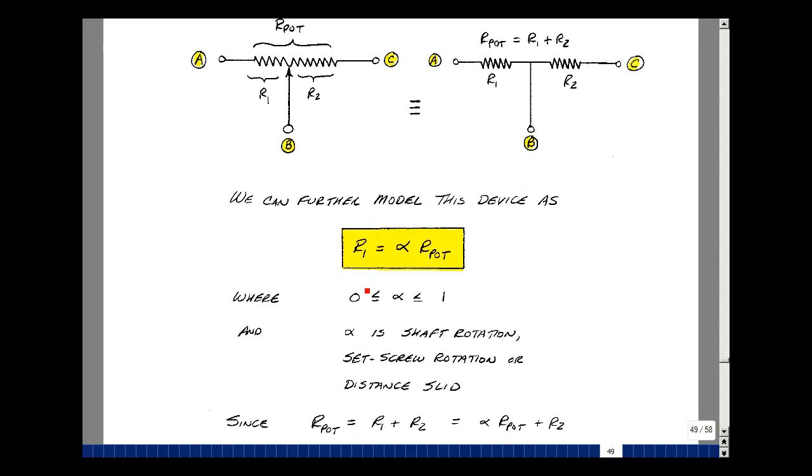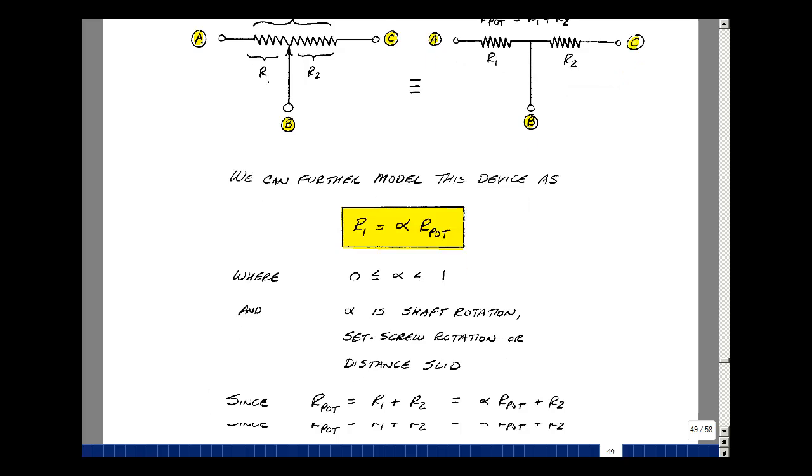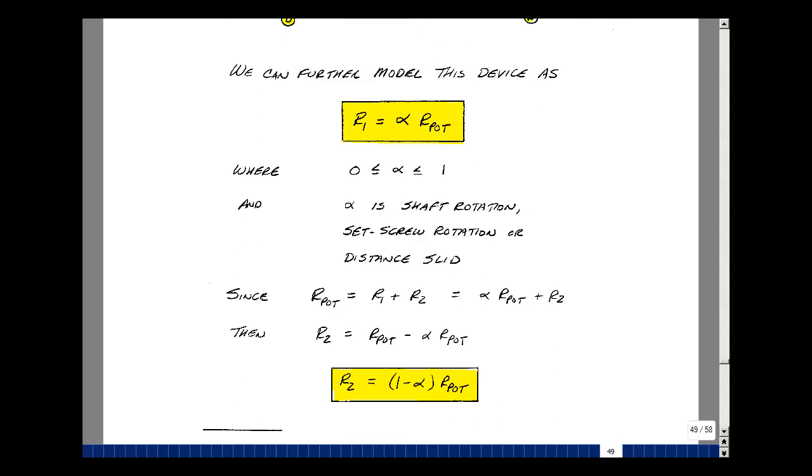Let me further define the value of R1 as a fraction of the total resistance. I'm going to use the Greek symbol alpha for that. Alpha is between zero and one. So if the pot is rotated with its shaft half the way, I'd have half the resistance of the pot for R1. If the total potentiometer resistance is R1 plus R2, and if I've now assigned a symbol to the value of R1, what's the value of R2? R2 is then equal to R pot minus alpha R pot, and so I've got one minus alpha R pot. If I was halfway rotating, the value of R2 would be one minus a half. If alpha were a quarter, then R2 would be three quarters of the pot resistance.